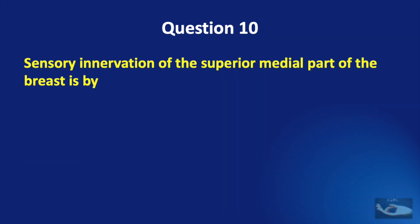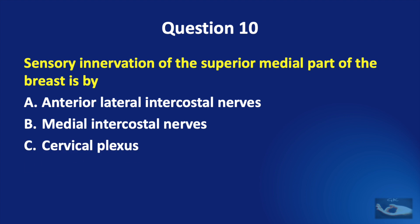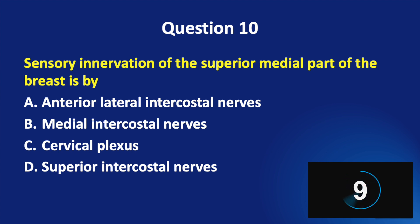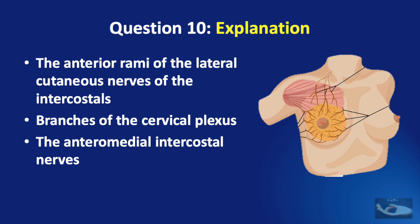Question number 10. Sensory innervation of the superior medial part of the breast is by: anterior lateral intercostal nerves, medial intercostal nerves, cervical plexus, or superior intercostal nerves. The correct answer is cervical plexus. The anterior rami of the lateral cutaneous nerves of the intercostals provide sensation to the lateral portion of the breast, including the nipple areola complex. Branches of the cervical plexus provide sensation to the superior medial portion of the breast. The anterior medial intercostal nerves provide innervation to the medial breast and the nipple areola complex.